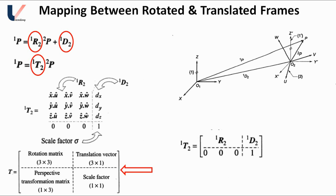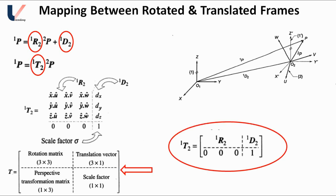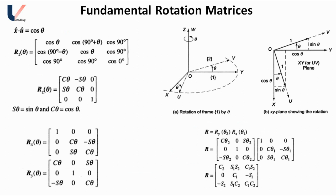The rotation matrix and translation vector we have already studied. The scale factor in robotics is sigma equals 1, and the perspective transformation matrix is the fourth part of this matrix, set to 0 where no perspective views are involved — so you can ignore this and set all elements of the perspective transformation matrix equal to 0. Now the last topic is the fundamental rotation matrix, where we will study rotation about the X-axis, Y-axis, and Z-axis.